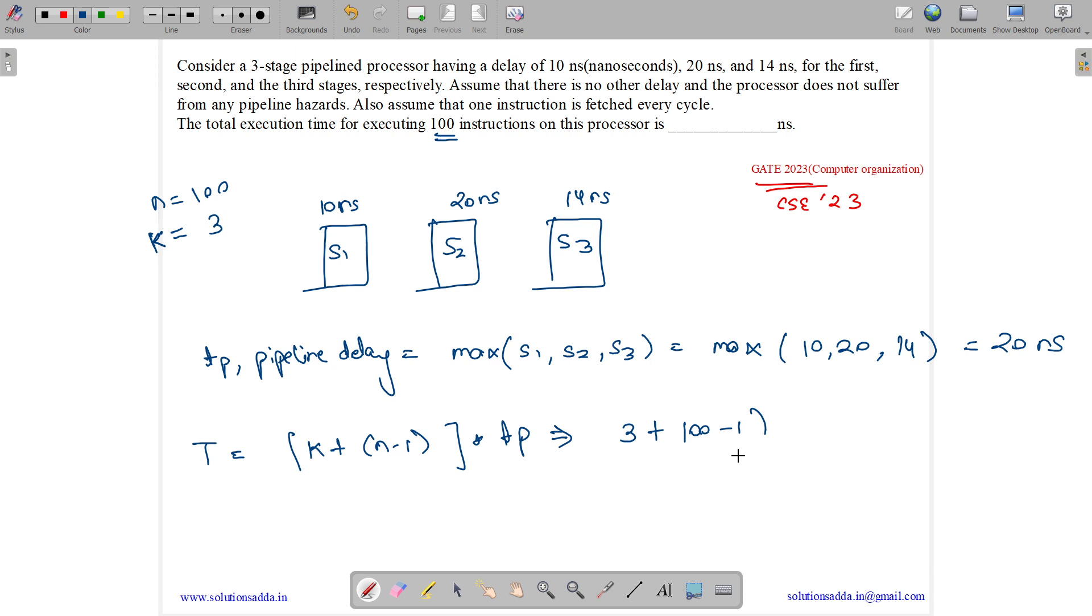So 100 minus 1 into 20 ns. So we have 101 into 20 which is, 100 plus 3, 103 minus 1, 102 into 20, 2040 ns. So answer is 2040 ns.